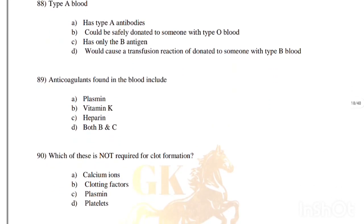Type A blood: has type A antibodies, could be safely donated to someone with type O blood, has only the B antigen, or would cause a transfusion reaction if donated to someone with type B blood. Correct answer is option D, it would cause a transfusion reaction if donated to someone with type B blood.